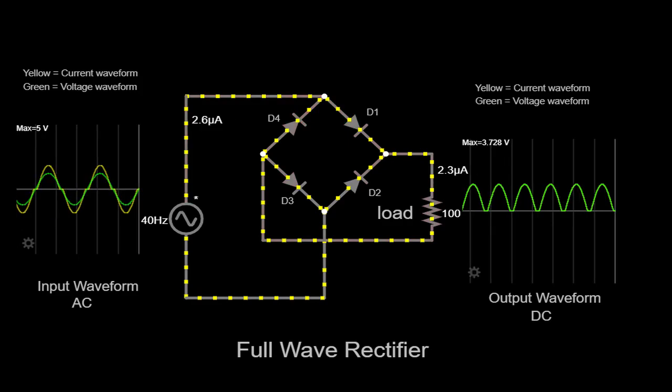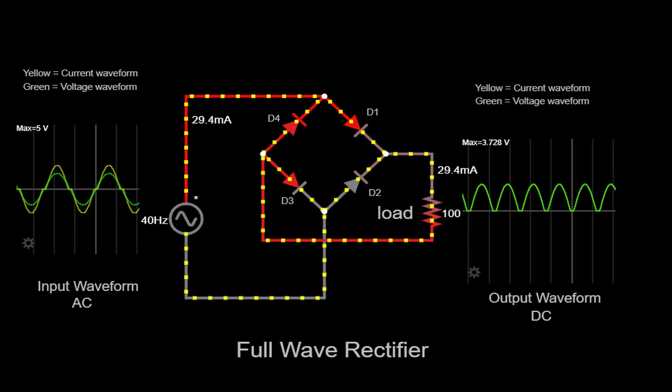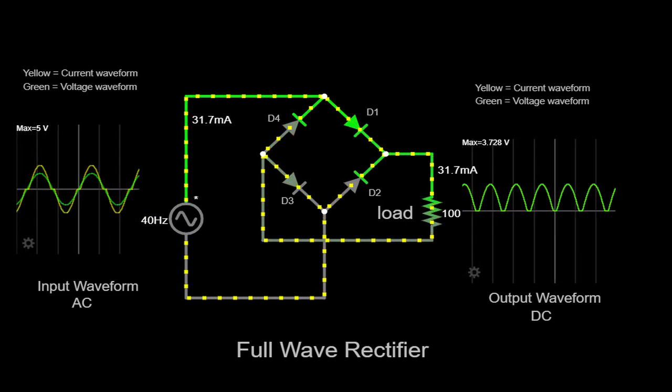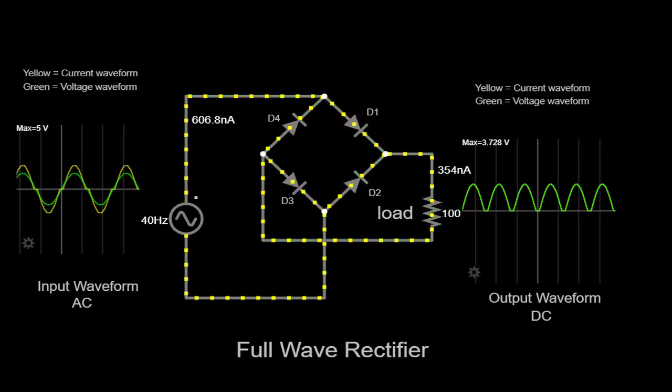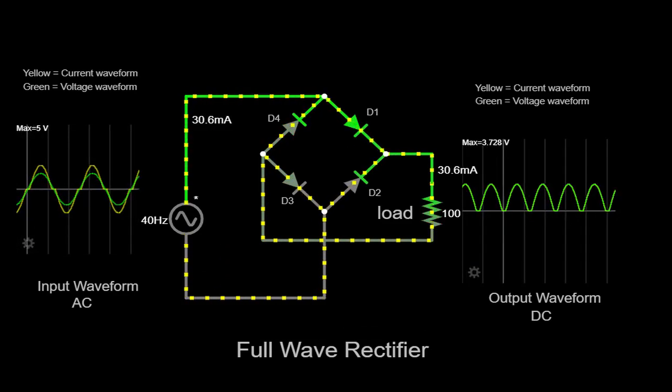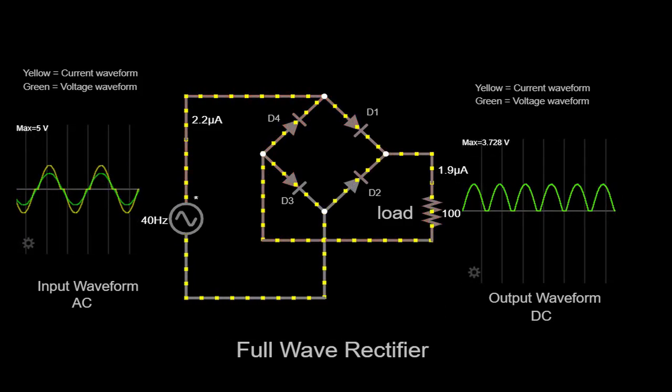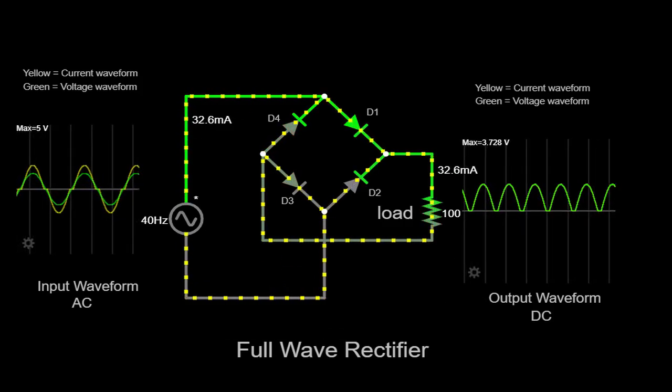When the AC input voltage is positive with respect to the ground, diodes D1 and D3 become forward biased and conduct current. This enables the current to flow through the load resistor in one direction, delivering power to the load. At the same time, diodes D2 and D4 are reverse biased, preventing any current from flowing through them.